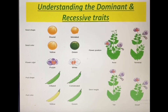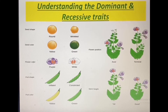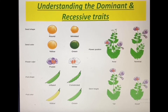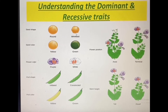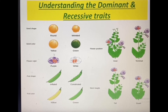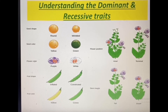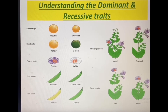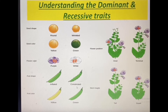Do we understand the dominant and recessive traits? Here are some diagrams. You can see the different seed shapes. The round shapes are dominant whereas the wrinkled are recessive. In case of seed color of pea plants, yellow color is dominant over the recessive green color. In case of flower color, purple is dominant over white. In case of pod shape, the inflated is more dominant than the constricted shape.